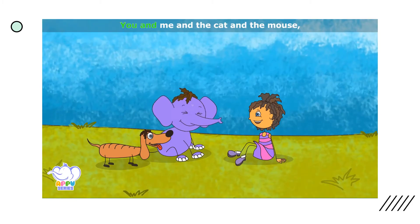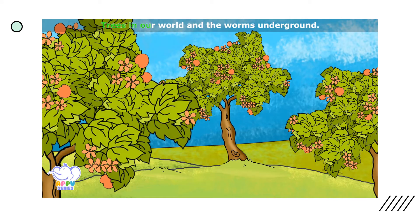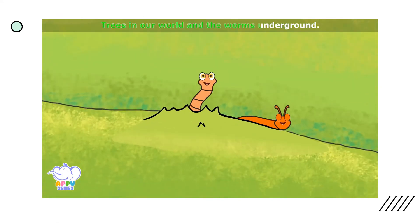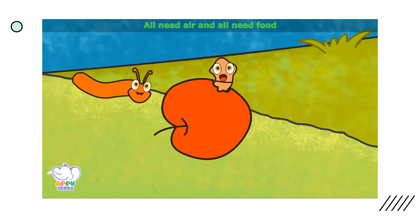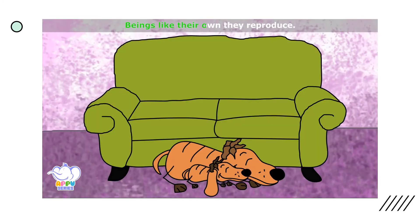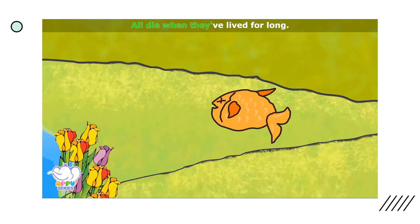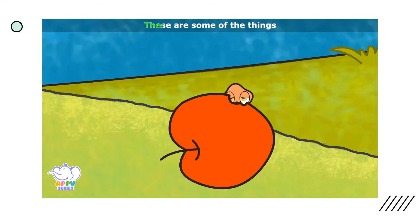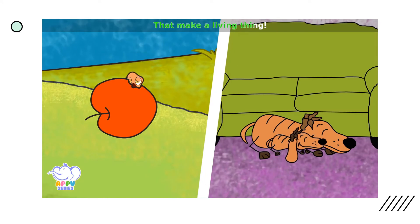You and me and the cat and the mouse, trees in our world and the worms on the ground — all need air and all need food. Beings like their own, they reproduce. They have their own special homes, and all die when they've lived for long. These are some of the things that make a living thing.